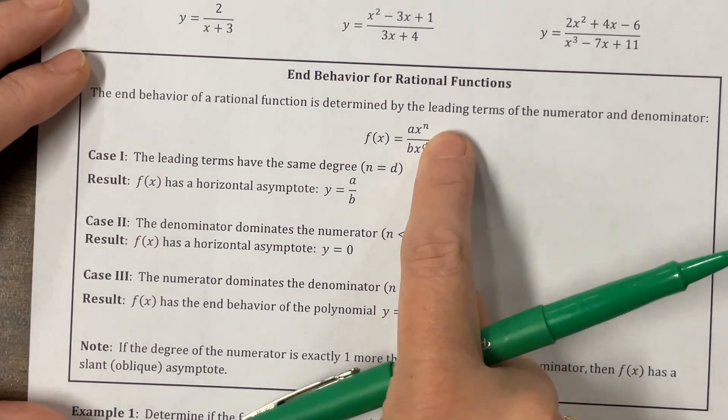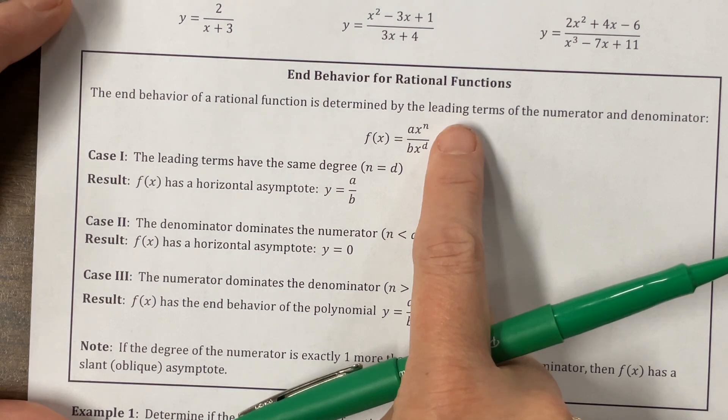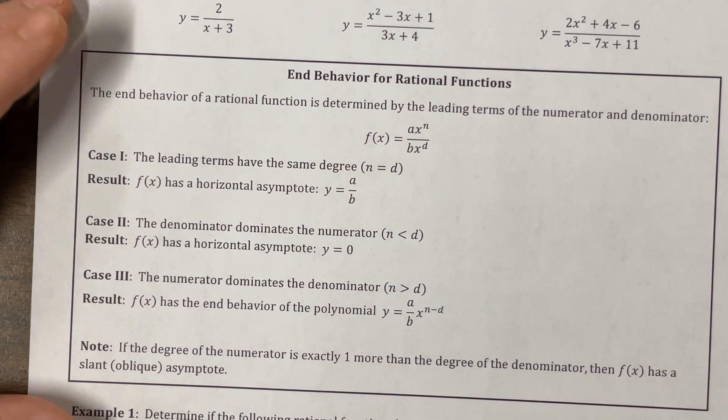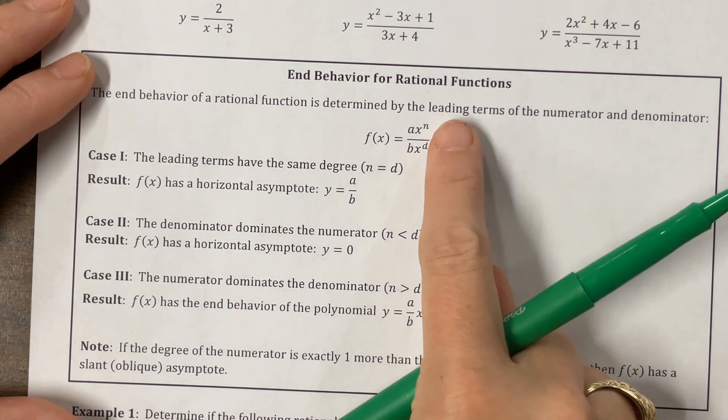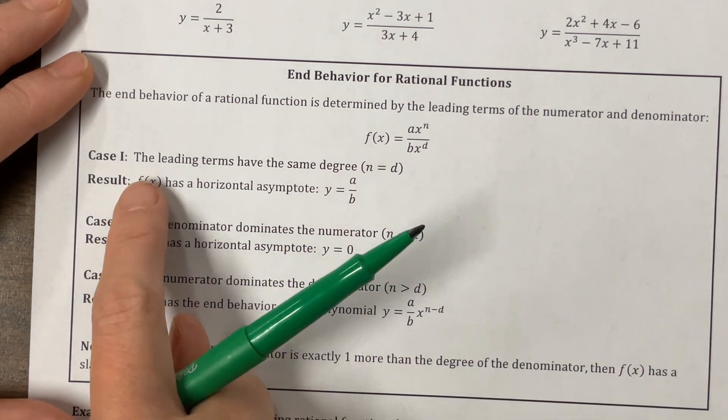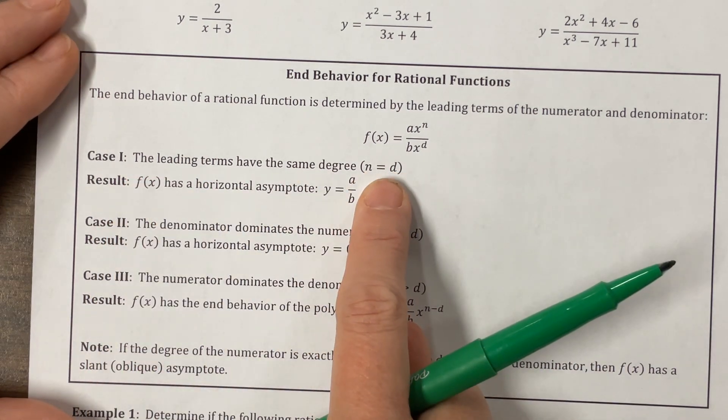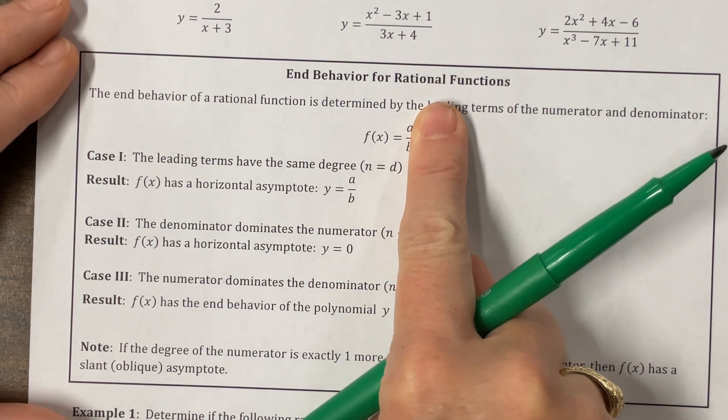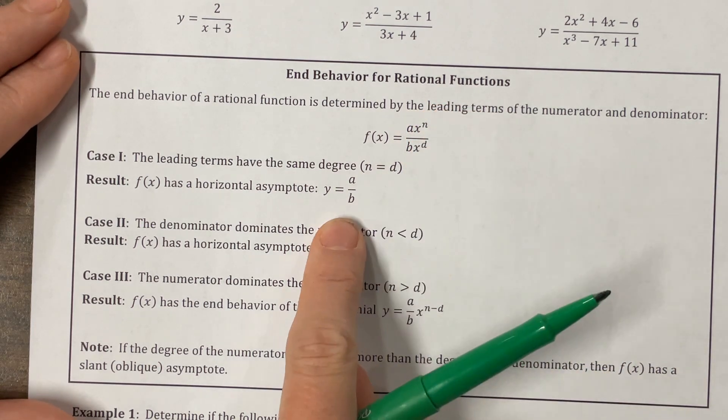So what we want to look at is, basically all we care about when we're discussing end behavior is the degree of the numerator versus the degree of the denominator and the leading coefficients. Okay, so in case one, they have the same degree, and when they have the same degree, we would just divide our leading coefficients, and that becomes our asymptote.